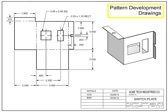Pattern development drawings detail the dimensions of a part when it is flat, as well as the final shape it takes, typically by bending or folding. Pattern development drawings are frequently used where sheet metal, fabric and leather, tubing, plastic, or cardboard is the raw material. Pattern drawings show not only the dimensions of the unfolded item, but also detail where the fold lines are.